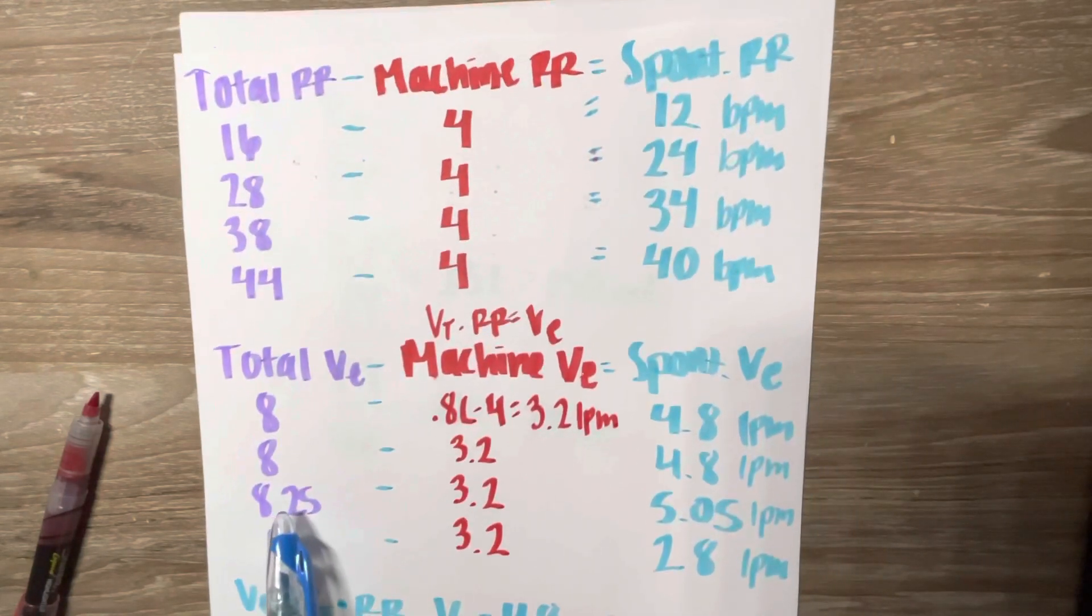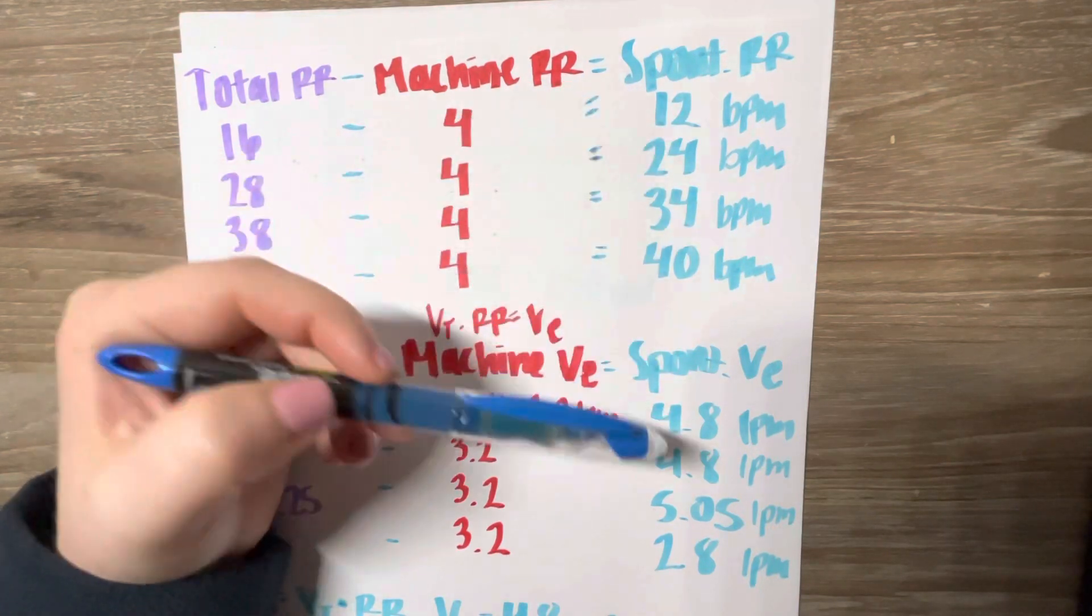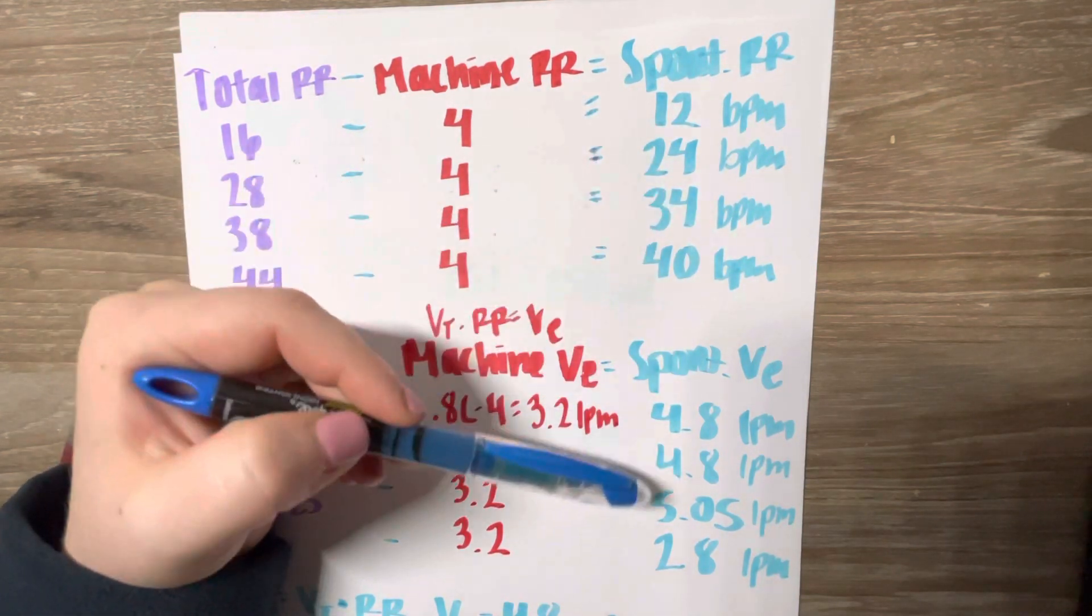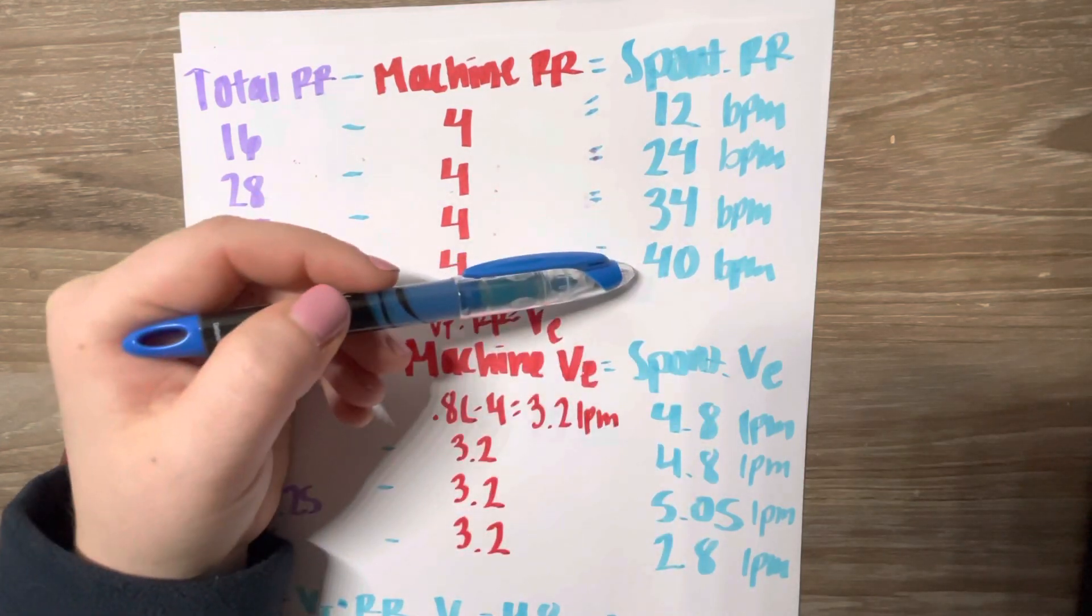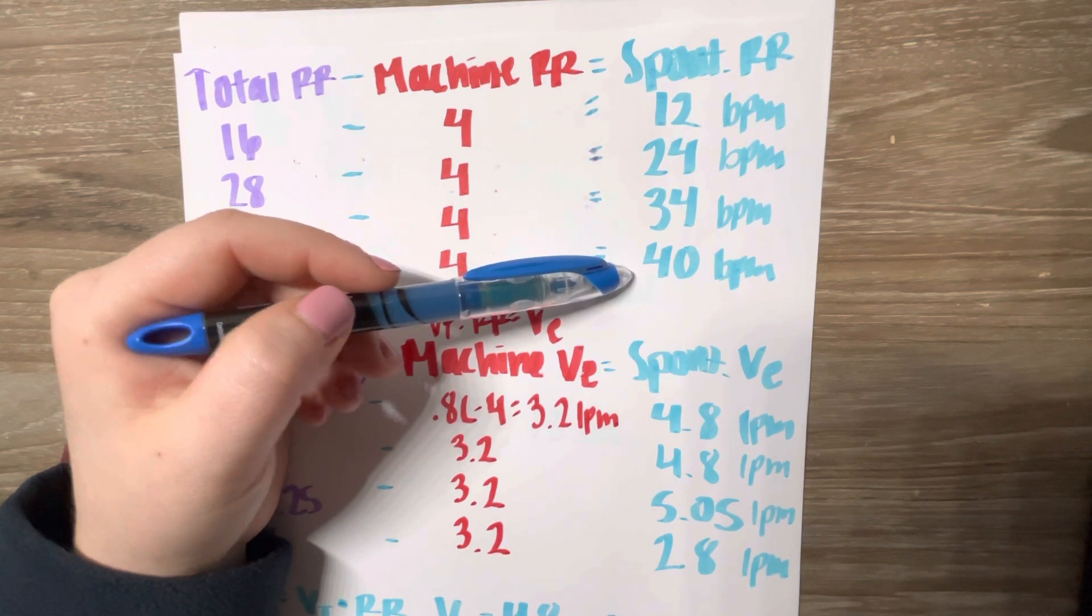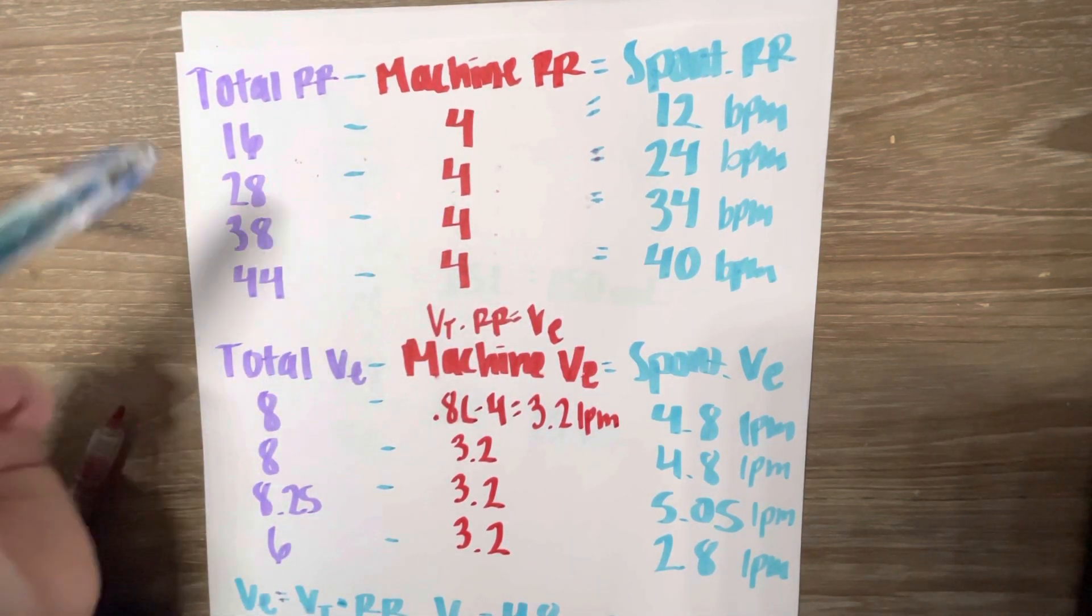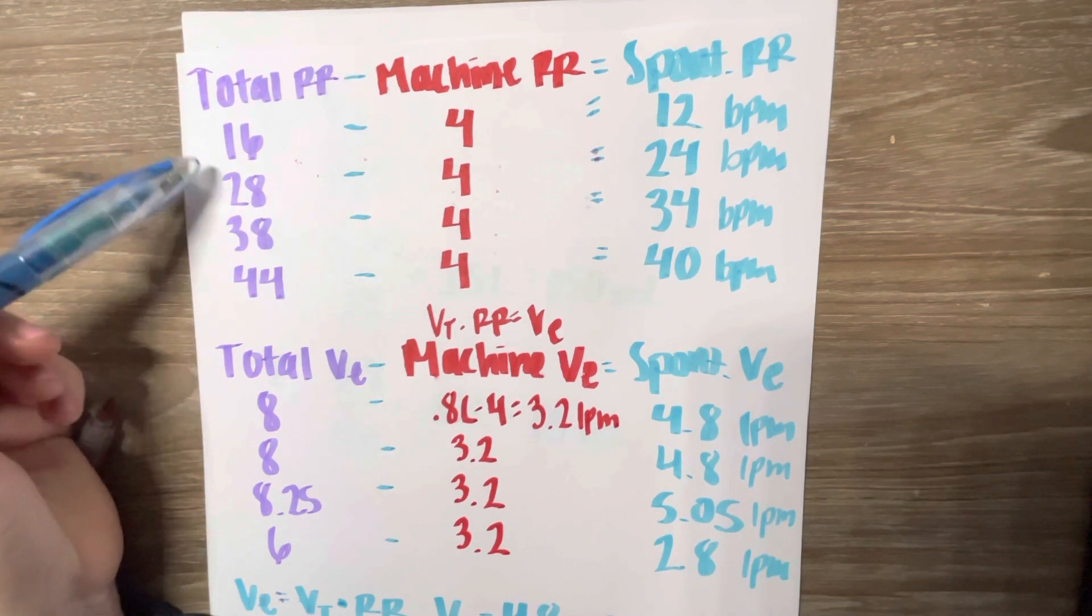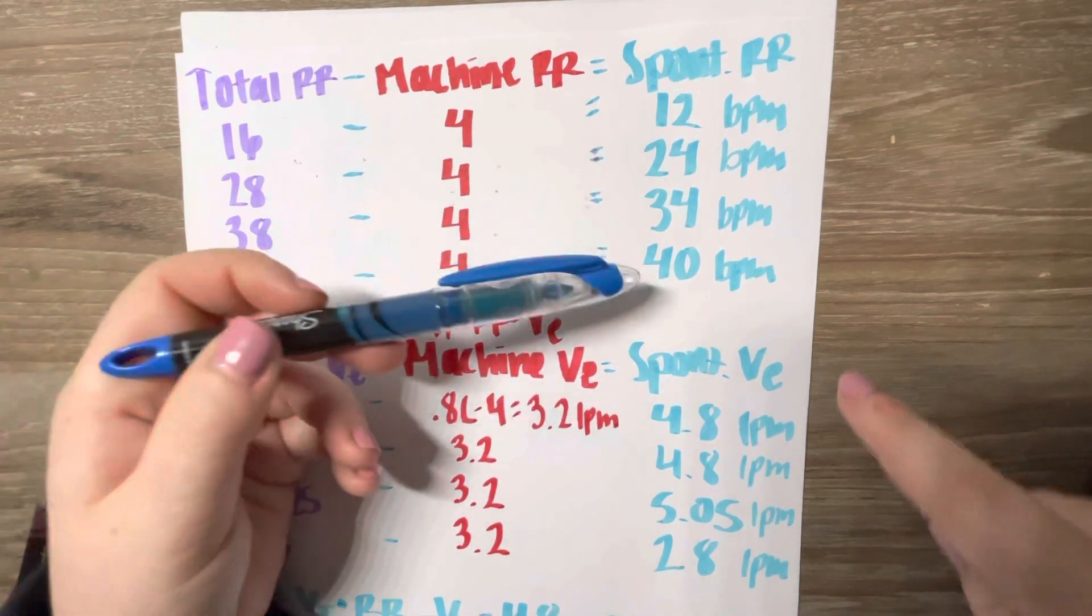And I knew that the 4.8 went with the 12, 4.8 with 24, 5.05 went with 34, and 2.8 went with 40. Because those were the separate hours of when the ventilator was checked. So this was at 8 a.m., 9 a.m., 10 a.m., and 11 a.m. So we just wanted to keep those together.